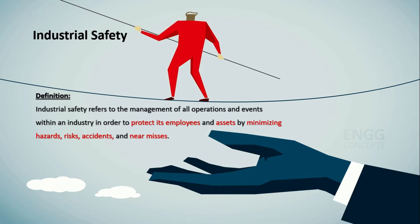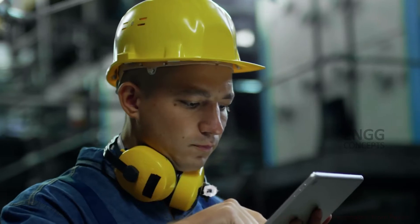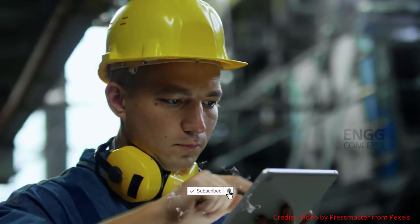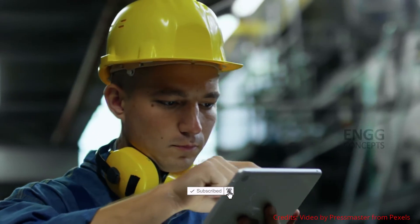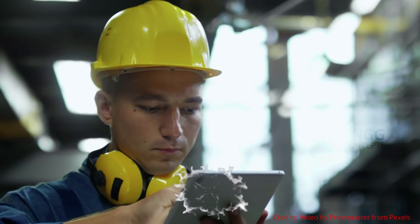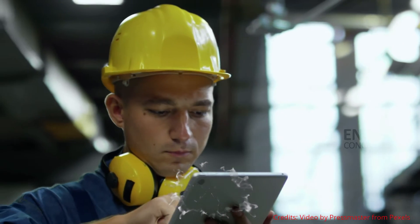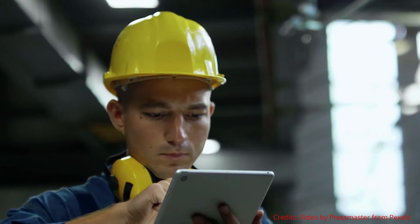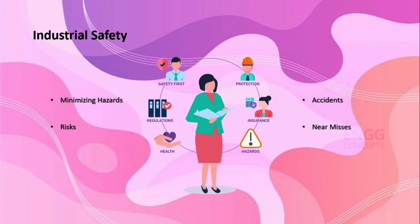The definition of industrial safety is: Industrial safety refers to the management of all operations and events within an industry in order to protect its employees and assets by minimizing hazards, risks, accidents and near misses.